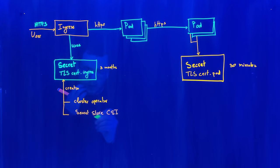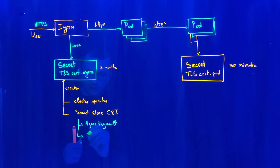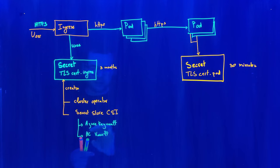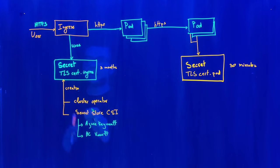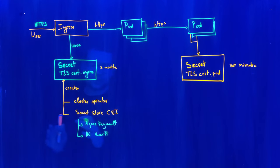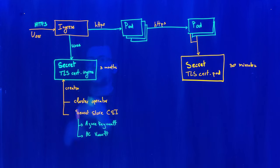To automate this, we can use the Secret Store CSI driver. This driver connects to external KMS solutions like Azure Key Vault or HashiCorp Vault, retrieves the certificate, and mounts it as a secret into the Kubernetes cluster, exposing it to the ingress. The ingress then consumes that TLS certificate. The key idea is that the TLS certificate for the ingress is very important and must be secured — saved and managed outside the cluster.